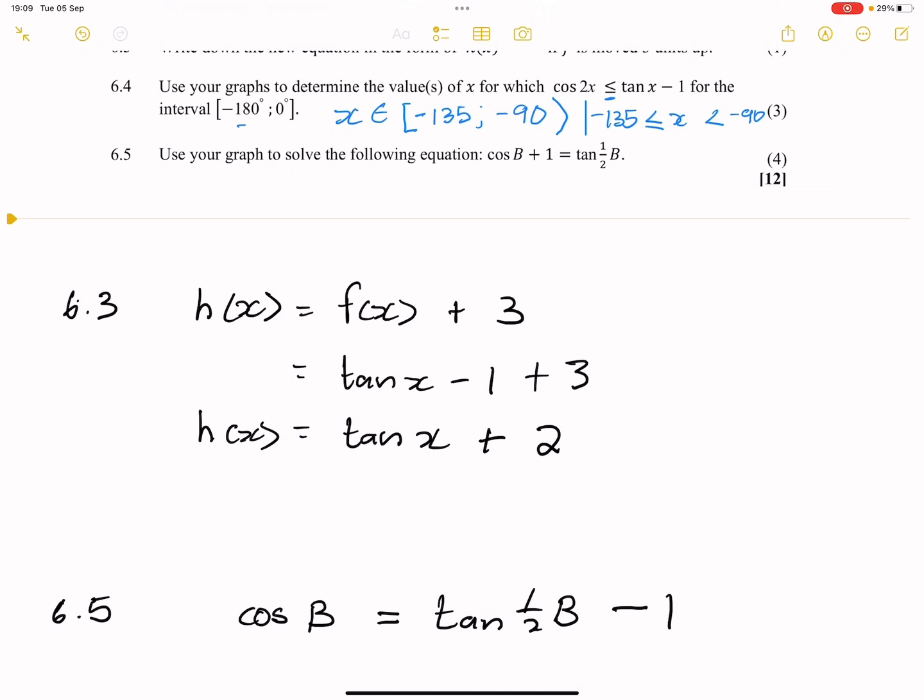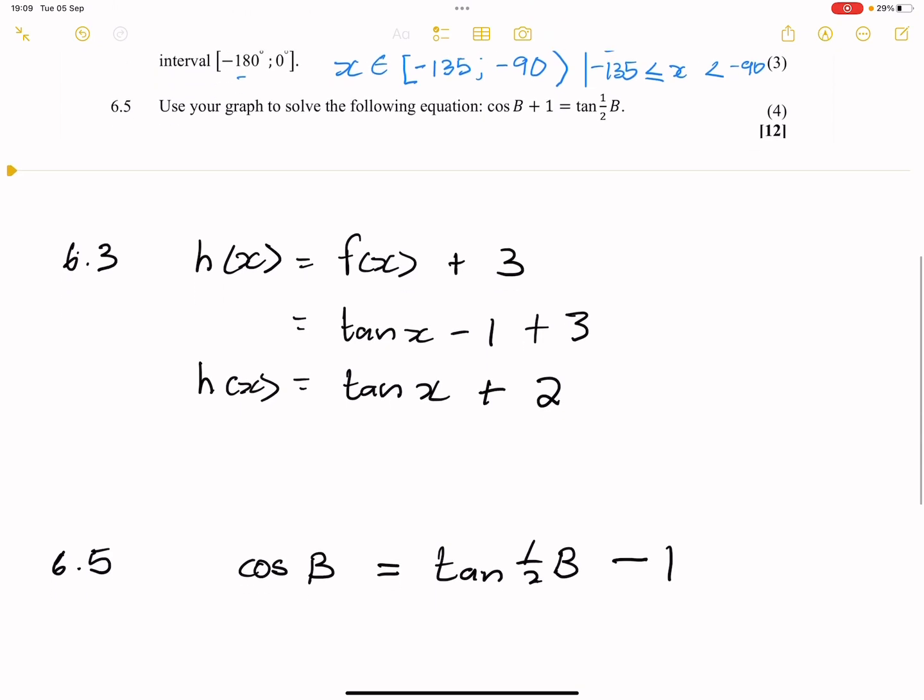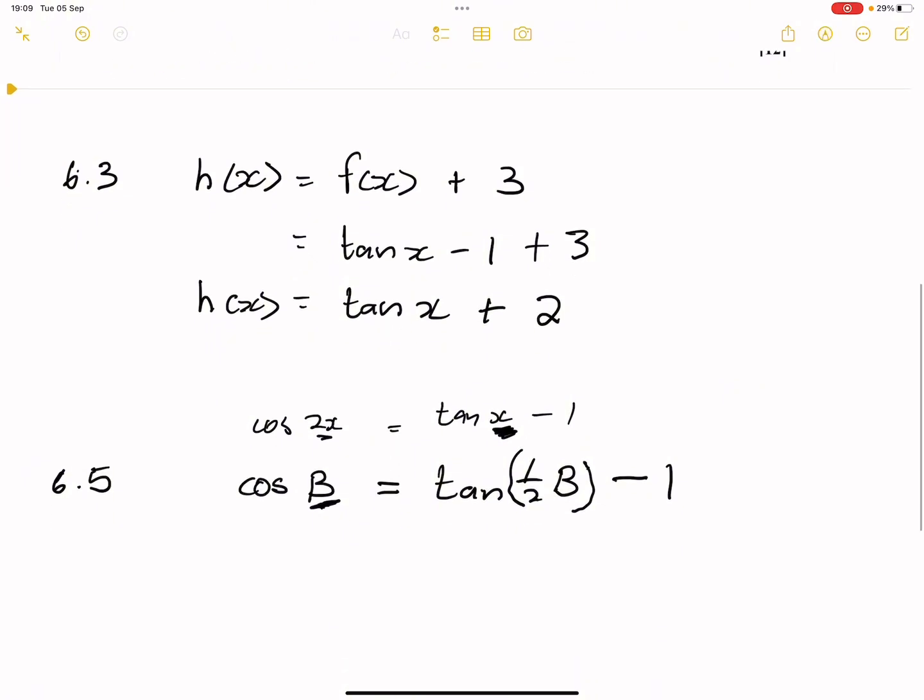So I'm going to write 6.5 here. So I've got cos(β) is equal to, so I'm going to try and have it mimic what we already have, tan(½β) - 1. Now, you do agree that it looks like those two graphs that we have. However, the two graphs that we have, what do we have there? cos(2x) equal to tan(x) - 1. So what does that mean? It means that they've replaced ½β for x and they have replaced β for 2x, and it makes sense that β is actually 2 times ½β.